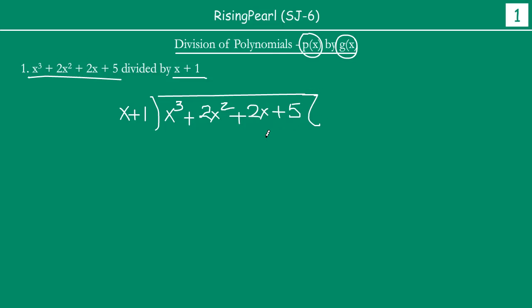So, this is our division. Now let us get started. We will take the first term of our dividend, which is x³, and divide it by the first term of our divisor, which is x. When you divide x³ by x, you get x². We have seen this from our laws of exponents in webisode series 1. So our first term in the quotient will be x².